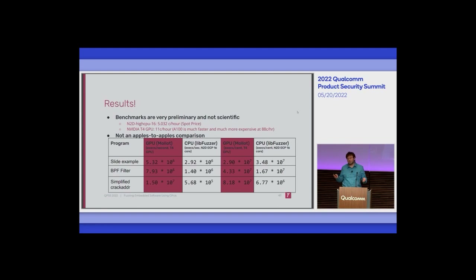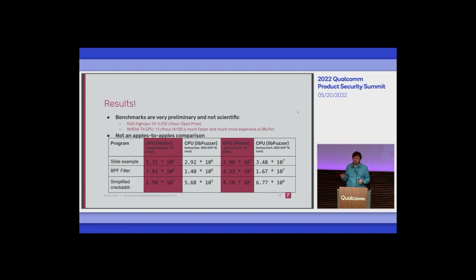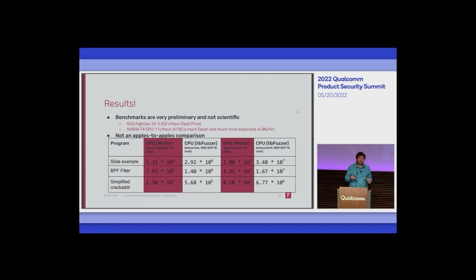Some results — I always want to caveat this because people want to know how fast it works. There's a huge caveat: this is not an apples-to-apples comparison. libFuzzer is working on x86 with natively compiled code, doing native compilation. Mullet, my GPU fuzzer, is lifting an ARM64 binary and running it on a GPU — one works at the binary level on native speed, the other does not. The libFuzzer version also has better and more thorough instrumentation; for instance, it can detect certain stack overwrites that I can't detect at the binary level.